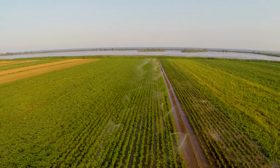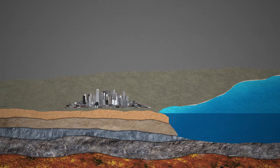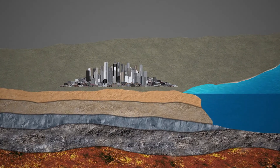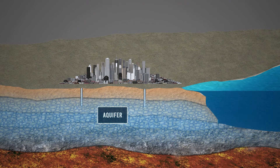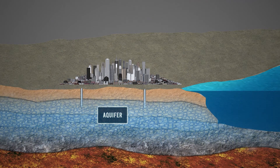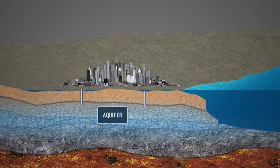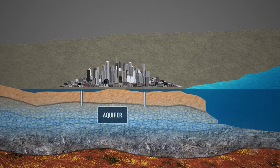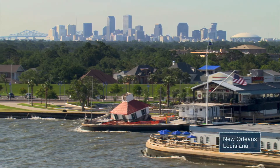Subsidence can also result from human activity. For example, many coastal cities rely on underground aquifers for fresh water. However, when water is extracted, it causes sediment to compact and the ground above to subside. This leads to additional sea level rise for these communities.